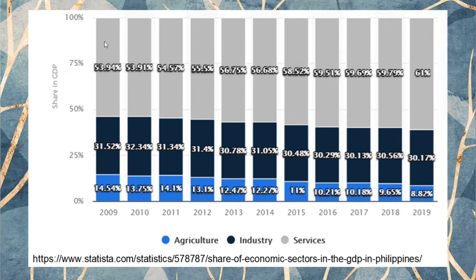In the final year of the Arroyo administration, services accounted for about 53% of GDP. President Arroyo is credited with closing deals that established many call centers. During the Aquino administration (2010–2016), services grew significantly due to the BPO industry, OFW remittances, and travel and tourism — rising from 53% to about 59.5%, a 5.5% growth over six years, while agriculture declined by about 3%.